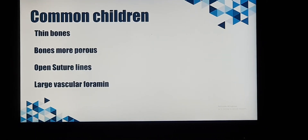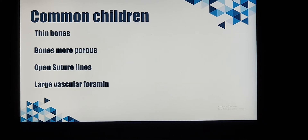Sinus complications are more common in acute sinusitis. Some complications are more common in children and some in adults. Complications are more common in children because the bones in children are very thin and they have small pores. Not only that, their suture lines are open and the vascular foramen is larger in size.